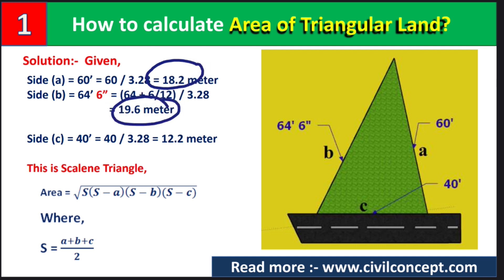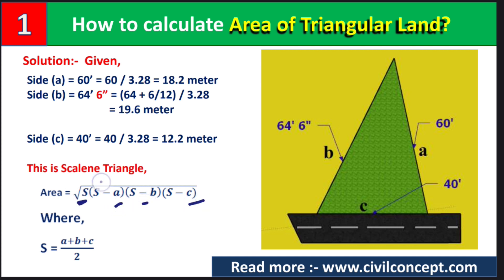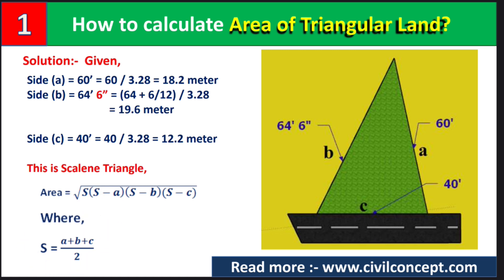The formula for area is the square root of s(s−a)(s−b)(s−c), which is Heron's formula. Here A, B, and C are the sides, but what is s? S is equal to (a + b + c) divided by 2 — simply add all the sides of the triangle and divide by 2 to get s.